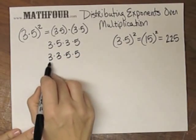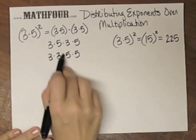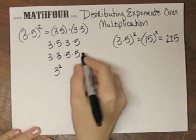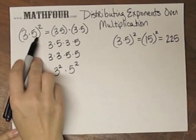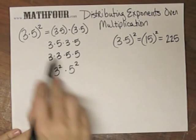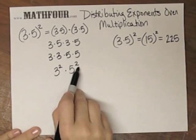So that's the scooching property. Well, what is 3 times 3 but 3 squared? And 5 times 5 is 5 squared. So now you see that 3 times 5 squared is the same as 3 squared times 5 squared.